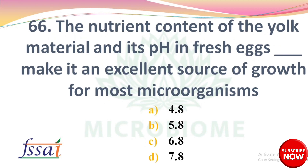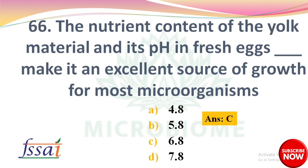The nutrient content of the yolk material and its pH in fresh eggs make it an excellent source of growth for most microorganisms. What is the pH? Options: A) 4.8, B) 5.8, C) 6.8, D) 7.8. The right answer is option C: 6.8.